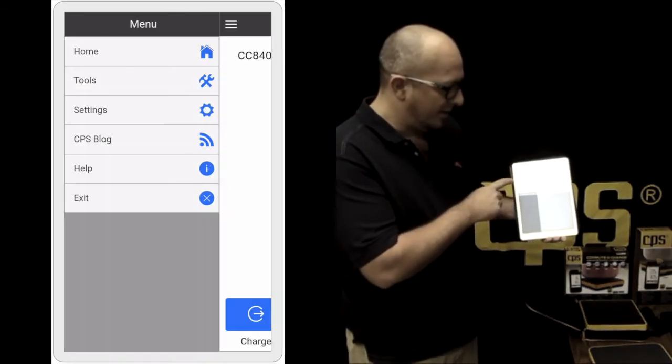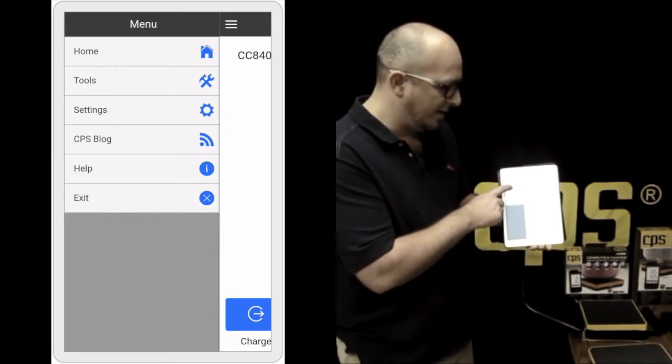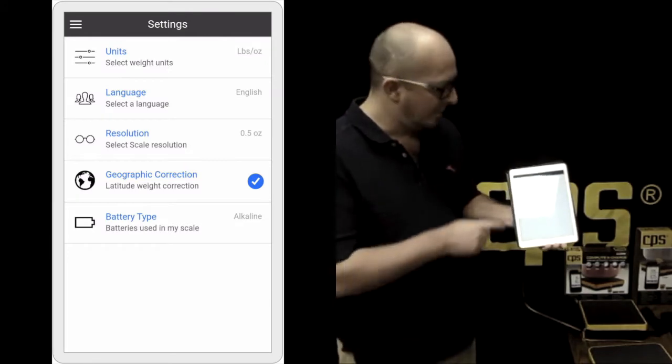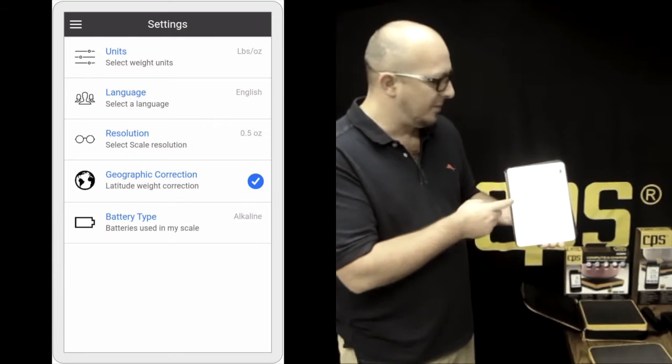Below that in the submenu are your settings. So again, you can set many of these settings in the introductory, but if you want to change them later on, you simply go to your settings tab. Here we have units. You can set your weight type, whether it's kilograms or pounds.